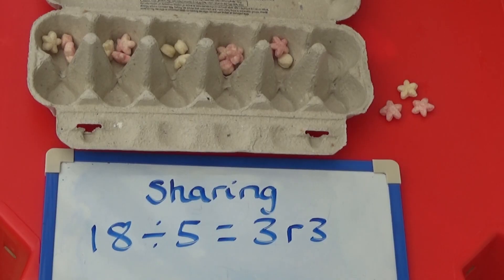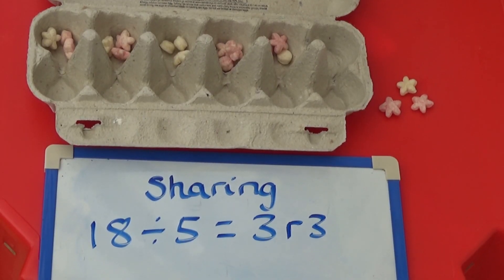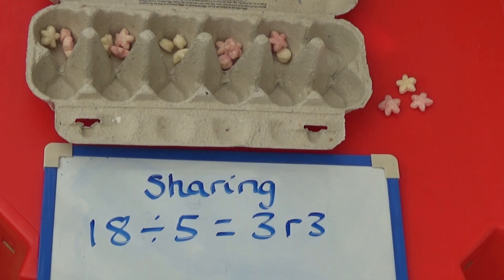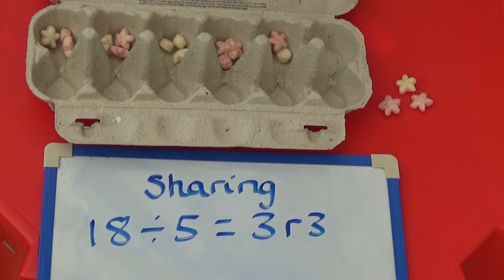You can also use an egg box to work out division calculations when there are remainders. Here I've worked out 18 divided by 5 as sharing. When I shared 18 pieces of cereal between 5 sections of the egg box, each section got 3 pieces of cereal, and I had a remainder of 3 pieces.